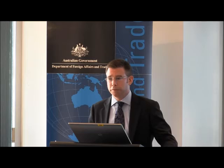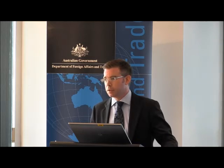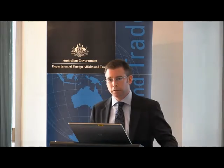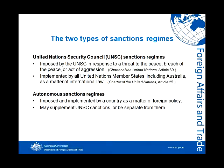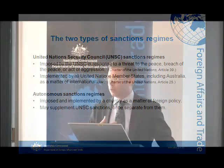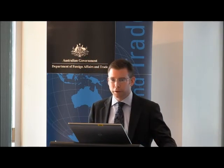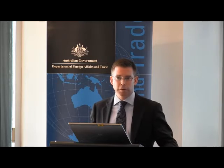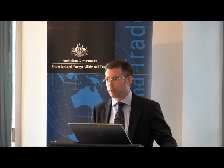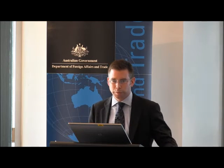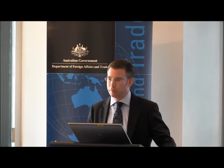In Australia we implement two different types of sanctions regimes. The first is United Nations Security Council, or UNSC, sanctions regimes. These are imposed by the UNSC in response to a threat to the peace, a breach of the peace, or an act of aggression. Once imposed by the UNSC, it's incumbent upon all UN member states, naturally including Australia, to implement those sanctions as a matter of international law. So we have no room to move when it comes to implementing UNSC sanctions regimes.